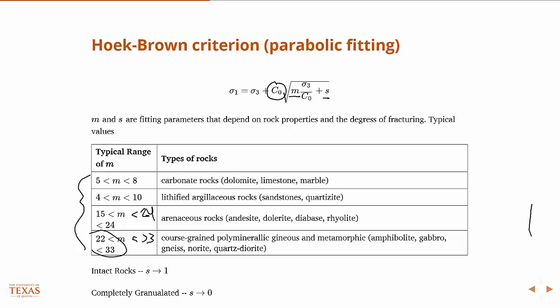And then S is a parameter that essentially interpolates between zero and one, depending on the degree of fracturing that has happened to the rock. So a perfectly intact rock with no fractures would have an S value of one, and a completely granulated rock would have an S value of zero. And so in reality, there's always something in between.